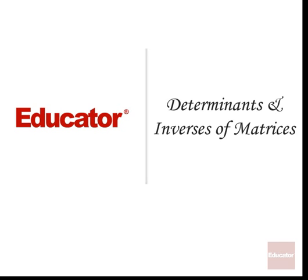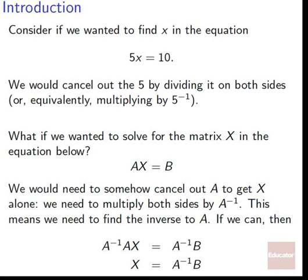Welcome back to educator.com. Today we're going to talk about determinants and the inverses of matrices. Consider finding x in the equation 5x equals 10. We'd cancel out the 5 by dividing both sides, or equivalently by multiplying by 5 inverse, which is 1 over 5. If we multiply by 1 over 5 on both sides, we cancel out the 5 because the multiplicative inverse of 5 is 1 fifth — that's why it's 5 to the negative 1.